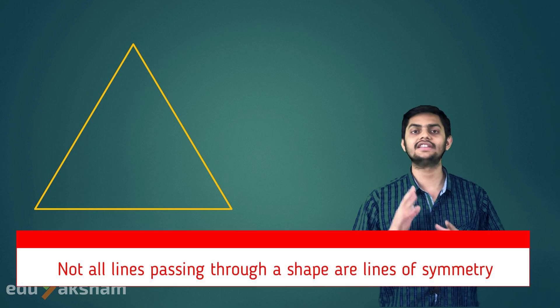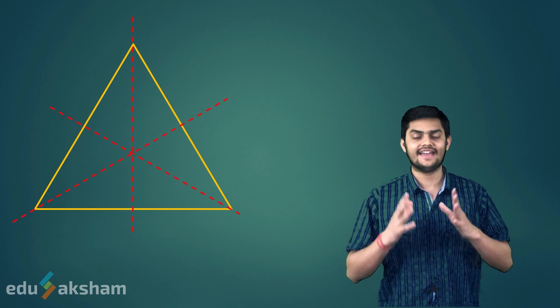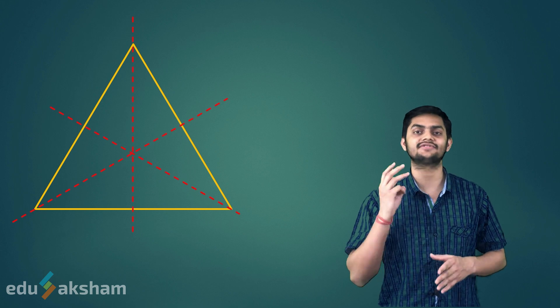From here, we conclude that not all the lines in a shape are lines of symmetry. An equilateral triangle has exactly three lines of symmetry.